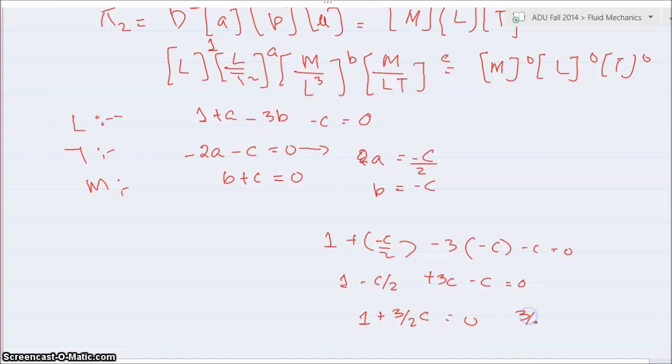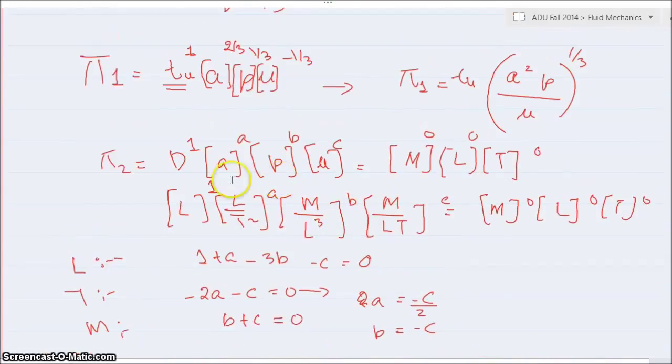So 3c minus c is equal to minus 1, so 3 by 2 c is equal to minus 1, c is equal to minus 2 by 3. And a is equal to minus c by 2, c is equal to minus 2 by 3, and we have b is equal to minus c, and b is equal to 2 by 3.